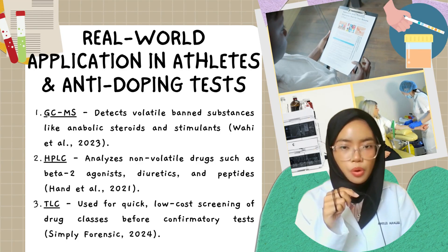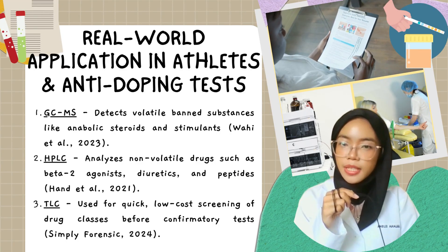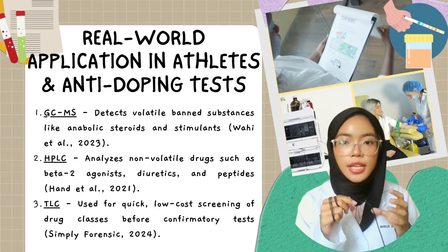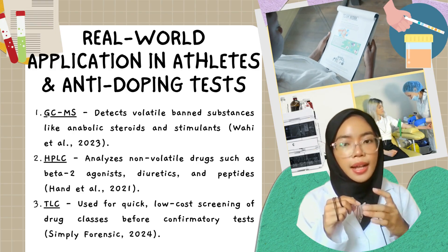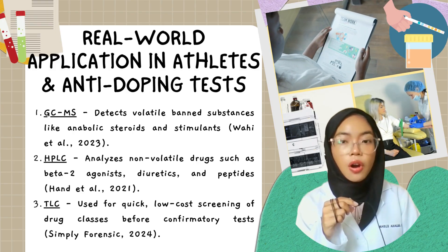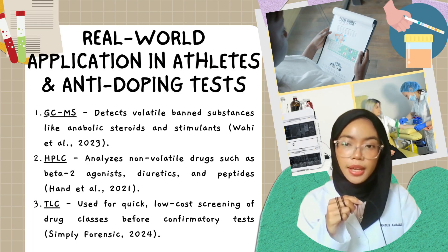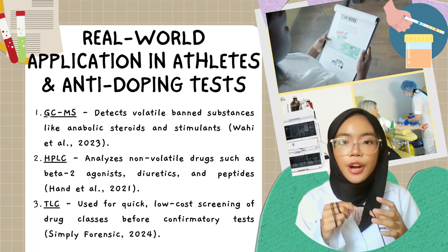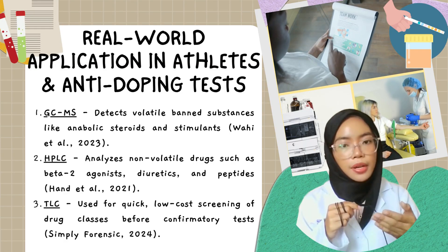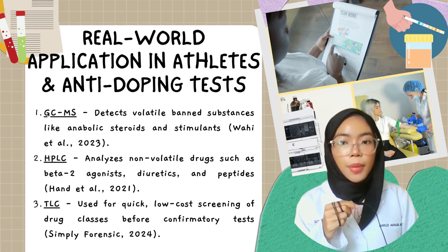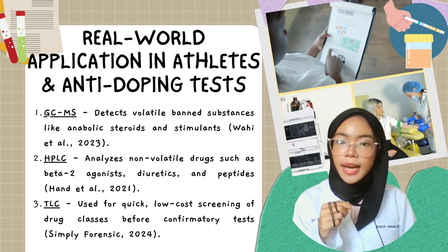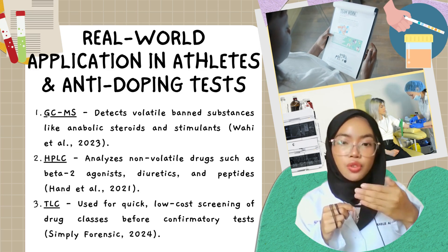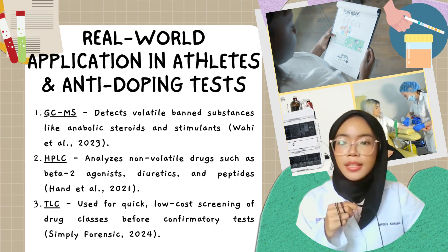Chromatography also plays a major role in protecting sports integrity. GC-MS is best for detecting volatile and stable substances like anabolic steroids or stimulants in blood and urine. HPLC is great for analysing non-volatile and polar compounds like beta-2 agonists, peptide hormones, and diuretics, which are often used to enhance performance or mask drug use.